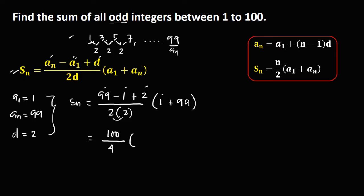Then times 1 plus 99, that's 100. Then we have now 100 divided by 4, that's 25, then times 100.